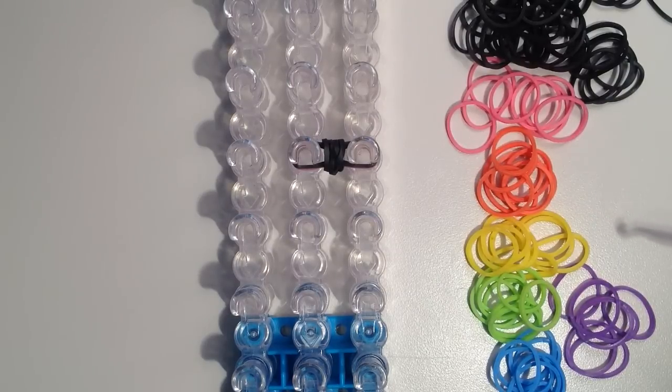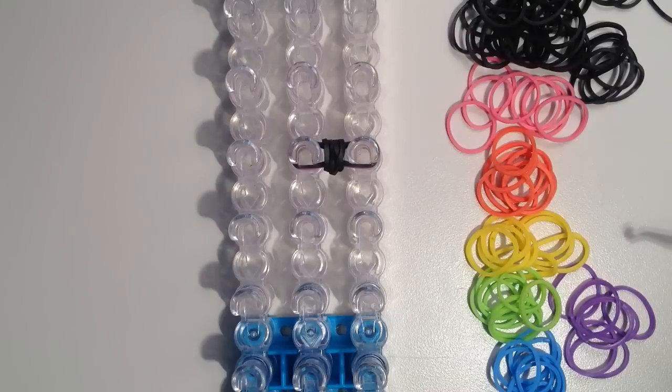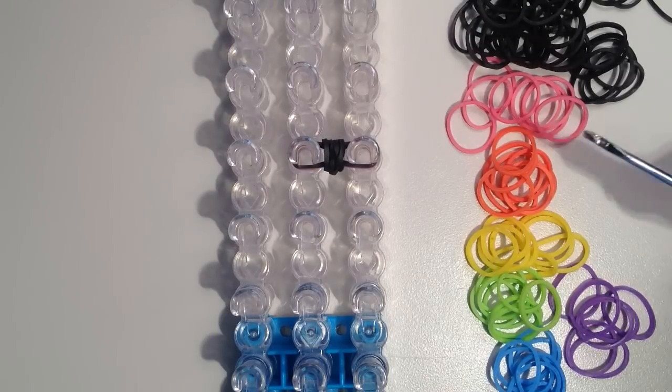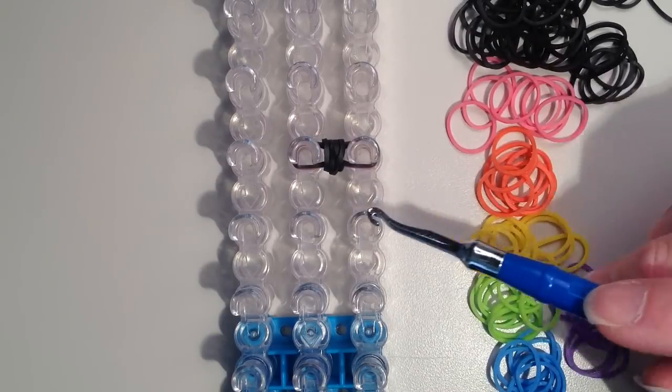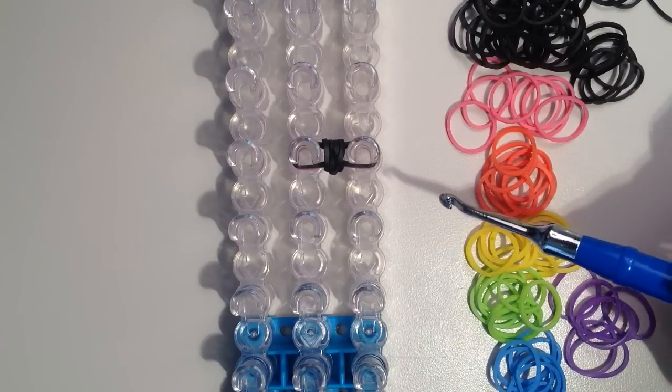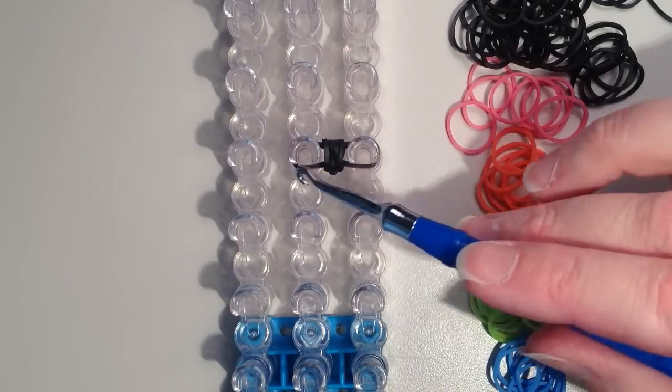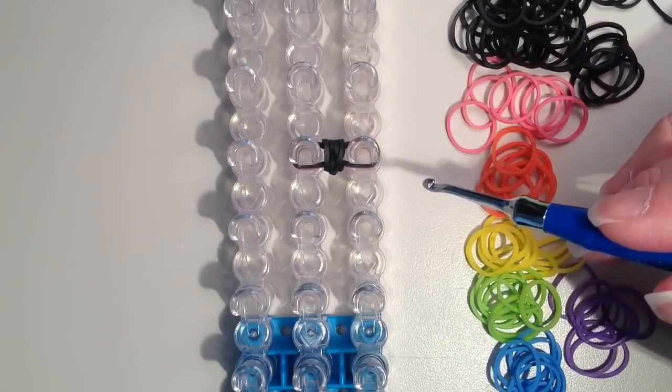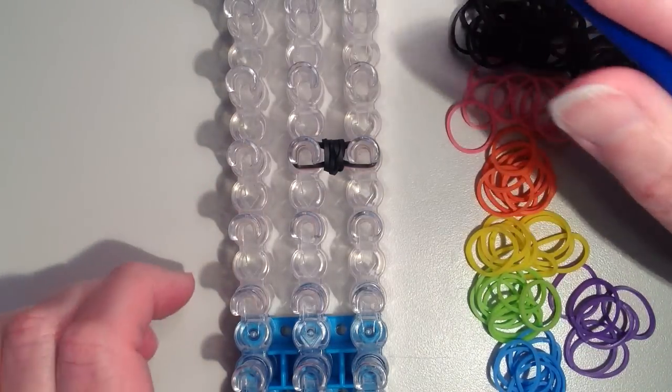But now the next step is going to be similar to the double cross spiral twist that I had created some time ago, where you're taking this upper layer of bands and twisting them around. We're only working with these two pins here, whereas in the double cross spiral twist there's four, but it's the same concept.